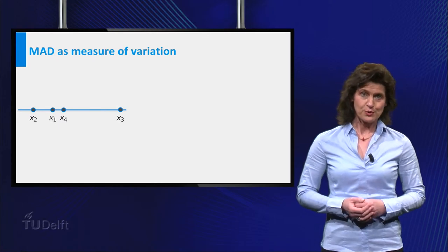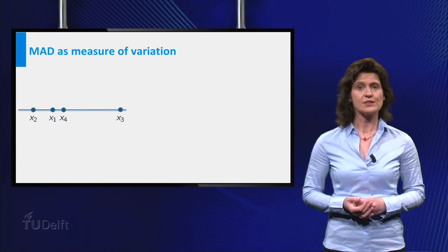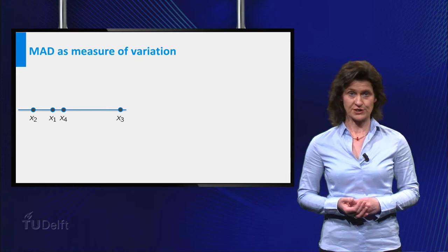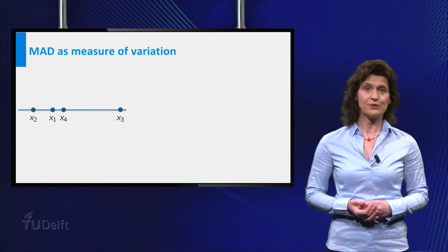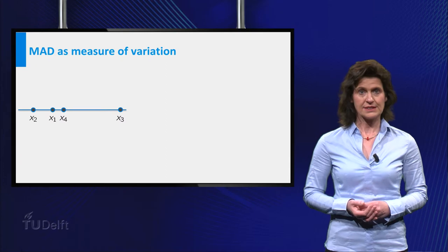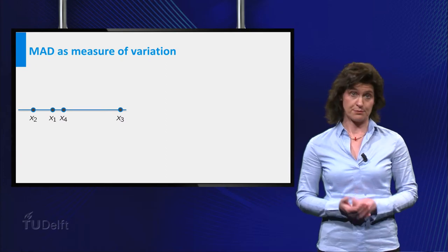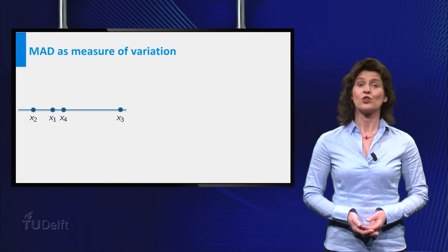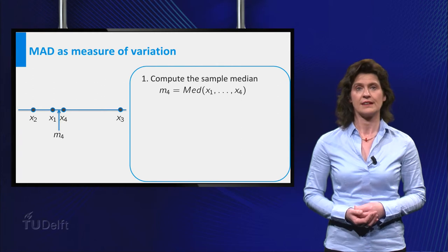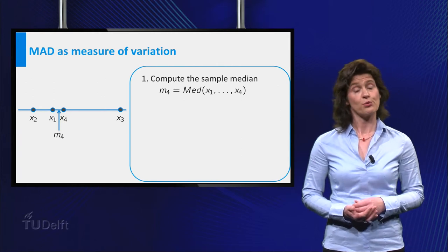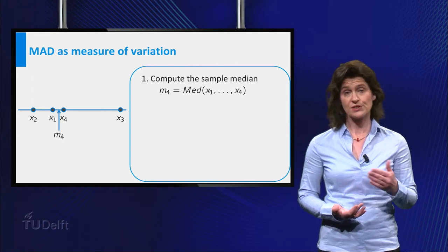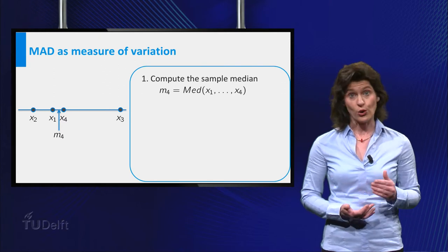Another method to quantify the spread in a dataset is by means of the median absolute deviation, commonly abbreviated to MAD. This MAD can be computed in four steps. First, compute the median of the data. As we have an example with four points here, the median is the average of the second and third observation, ordered in magnitude.